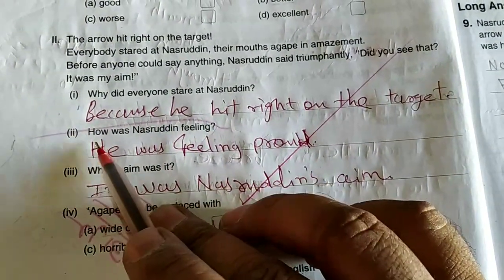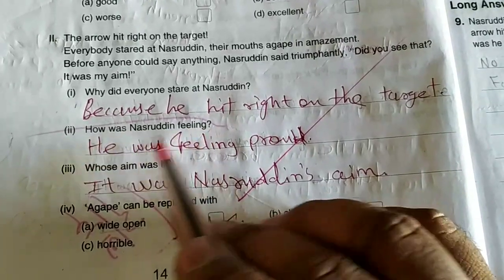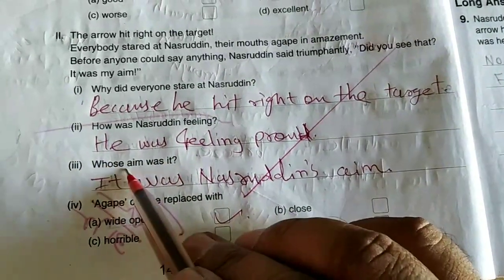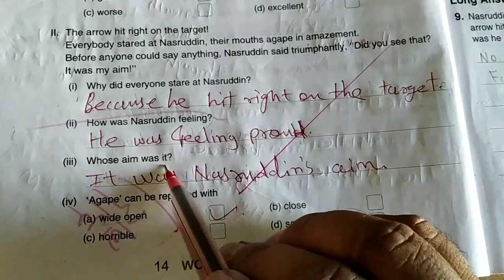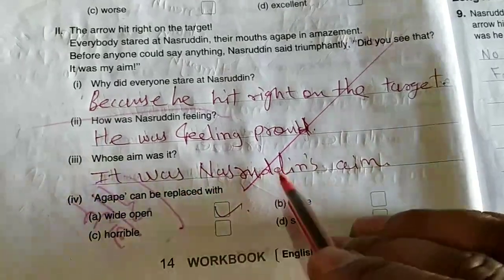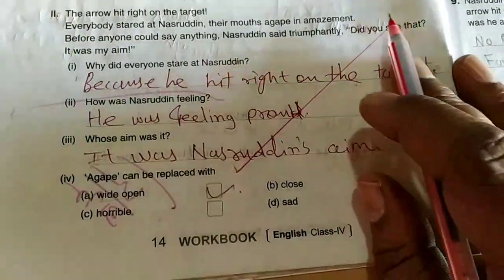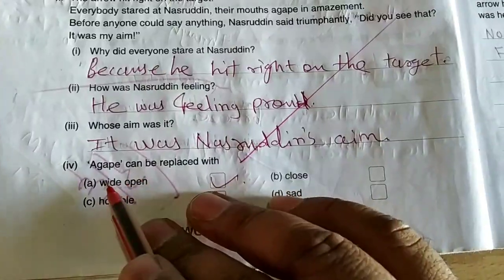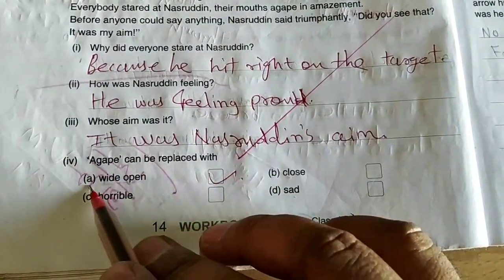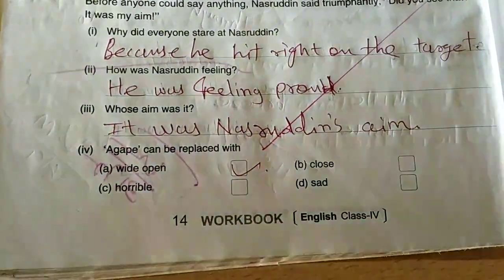Question 2: How was Nasruddin feeling? He was feeling proud. Whose aim was it? It was Nasruddin's aim. Note: 'Agape' can be replaced with 'wide open.'